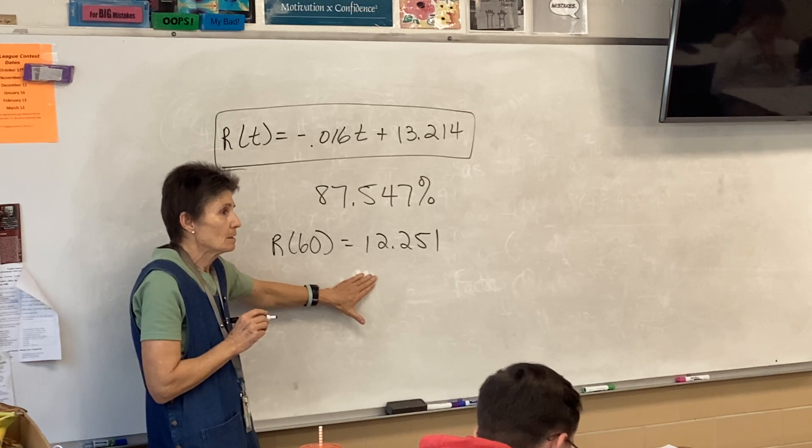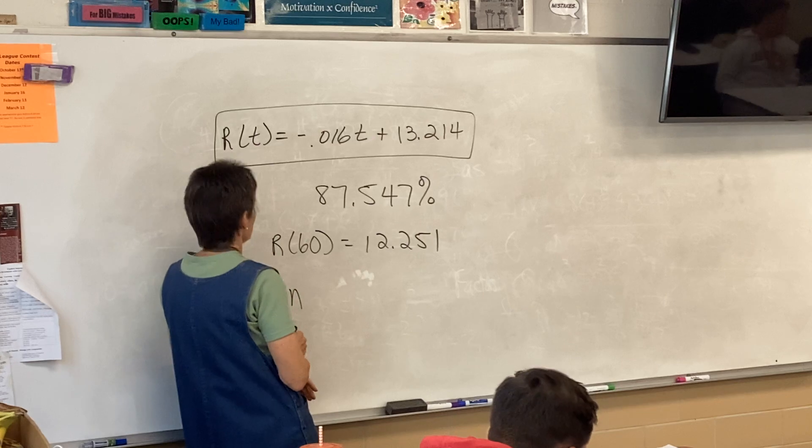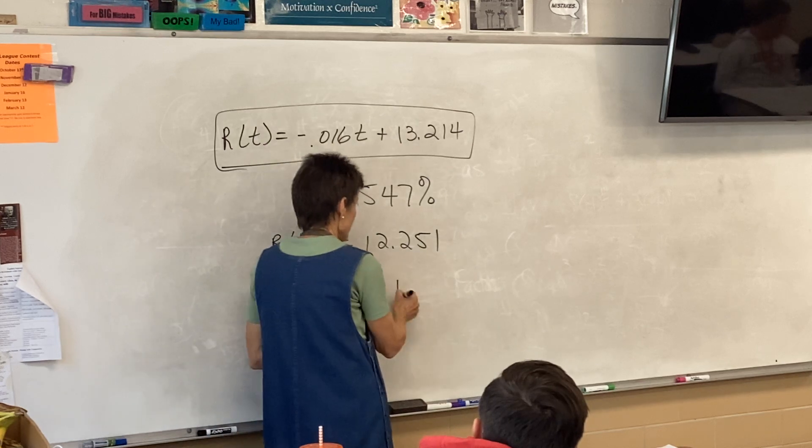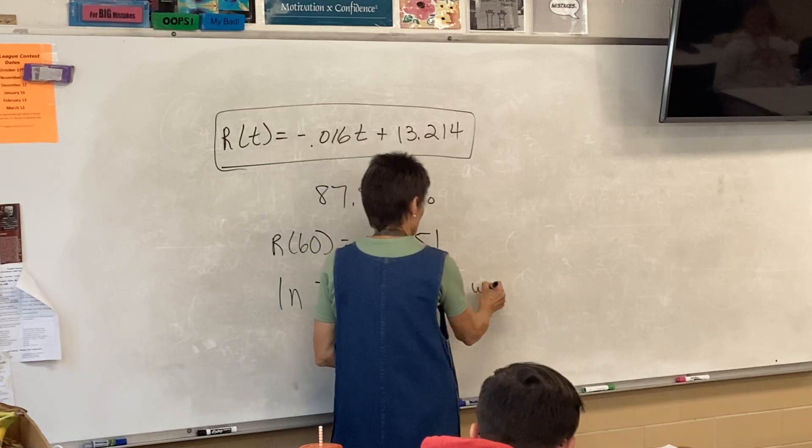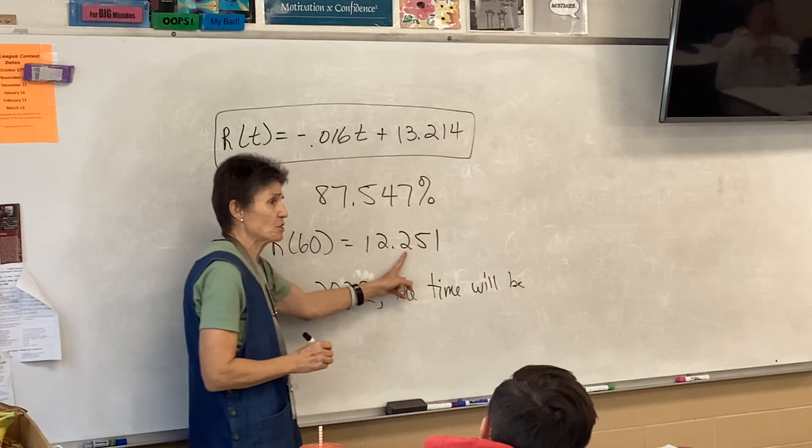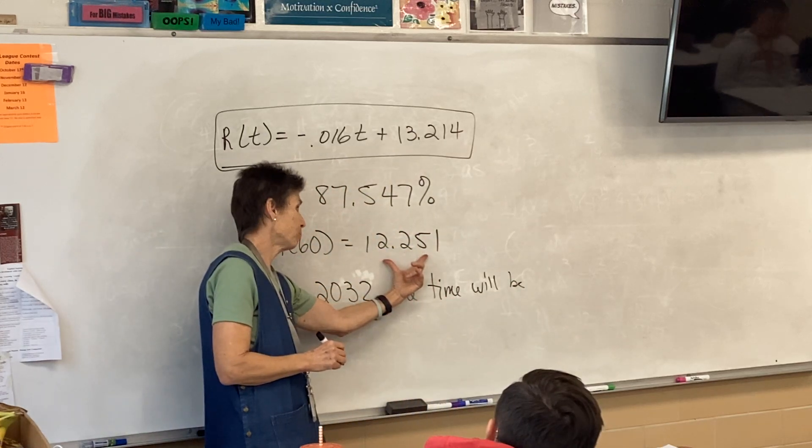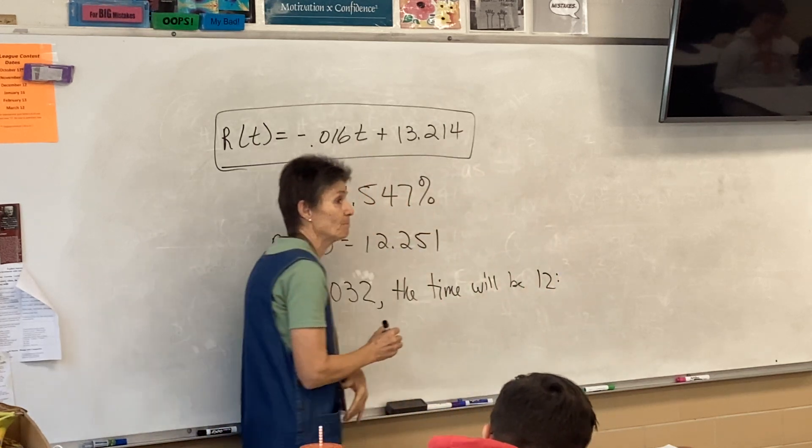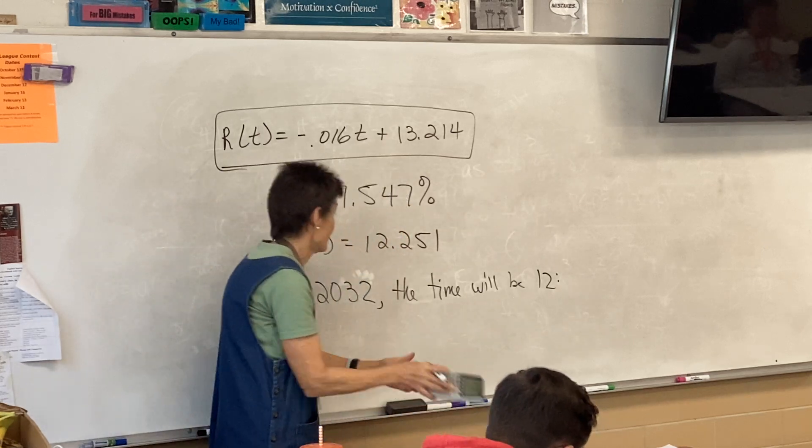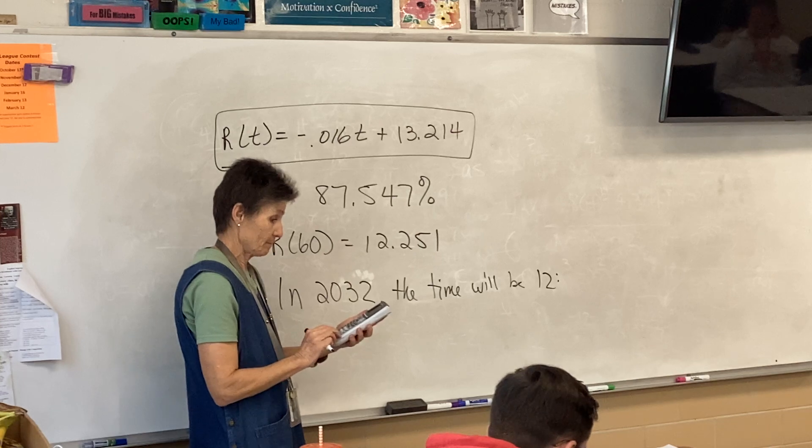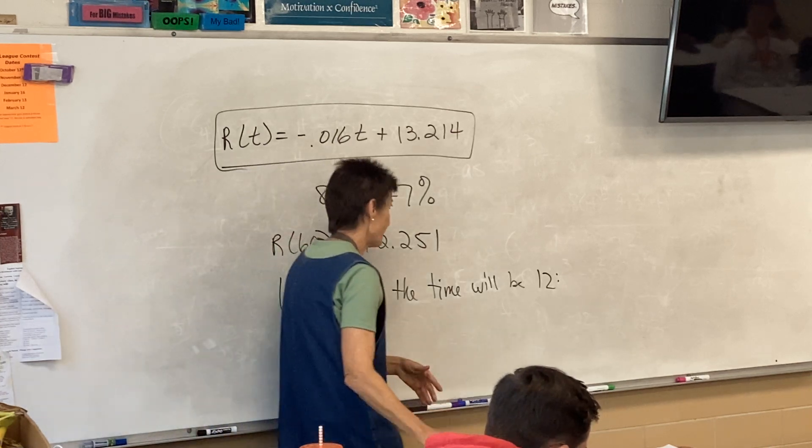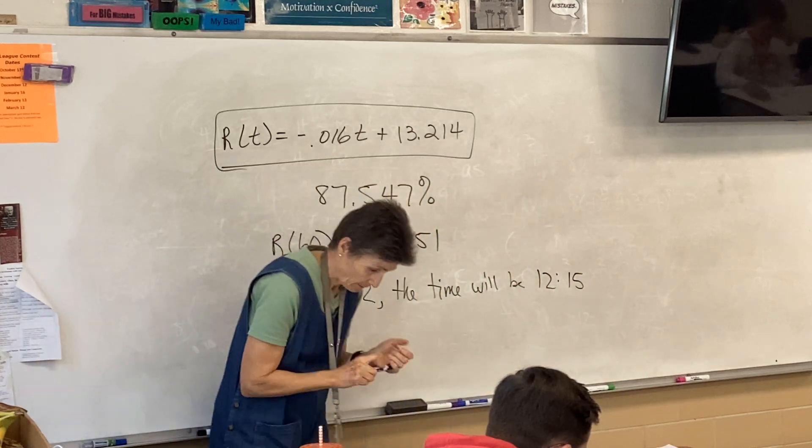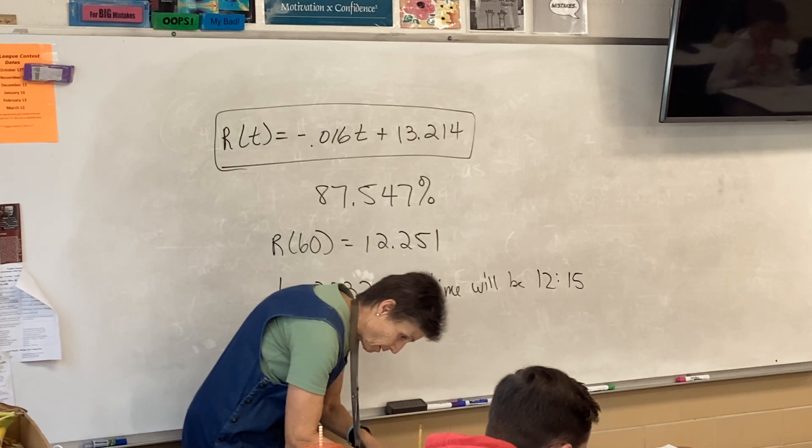60 years after 1972. So, in, what would that be, 2032? The time will be... What? Now, let's change that back. What's the unit on this? 12.251 minutes. So, it's going to be 12 minutes. And how many seconds? 15. We're not going to do that real quick. 15? About 12, 15? 15.